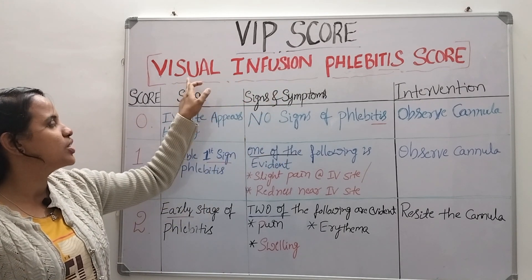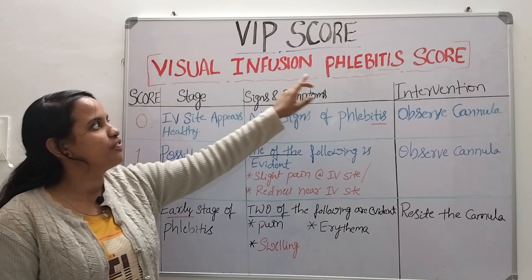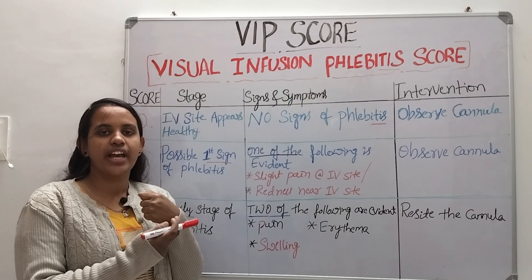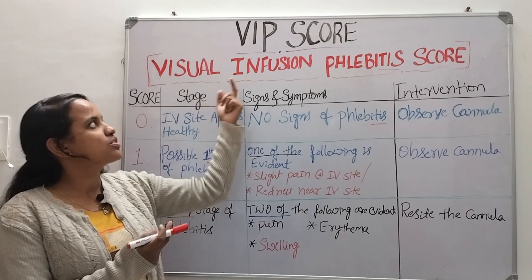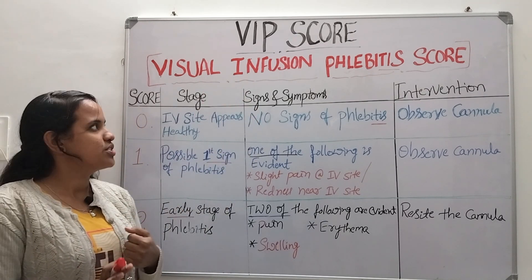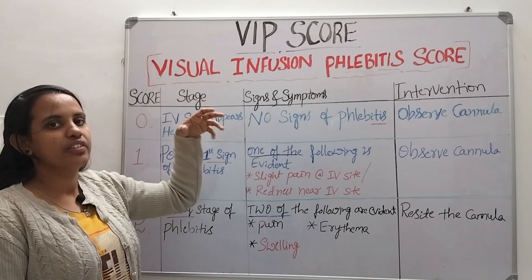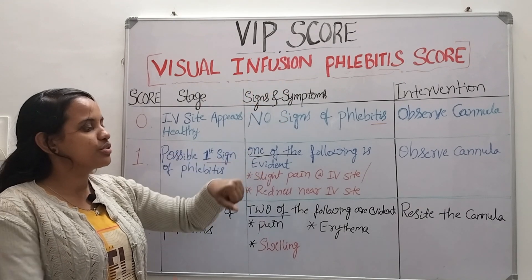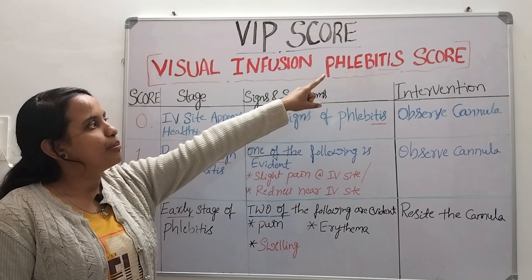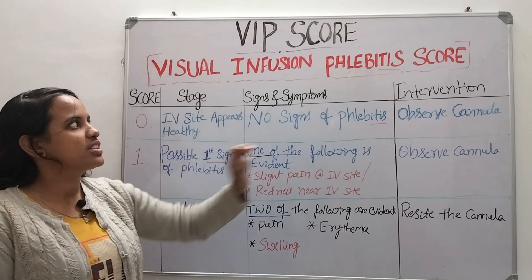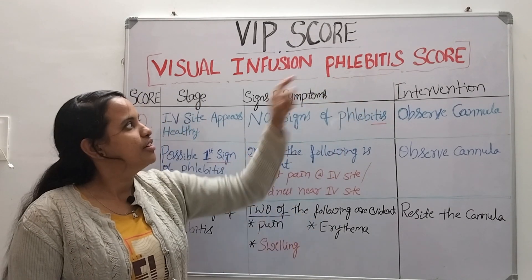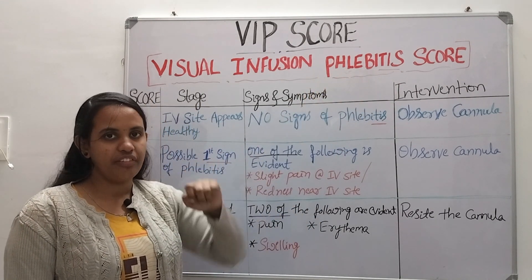VIP score means Visual Infusion Phlebitis score. We use this score to assess the patency of the IV cannulation site. Visual means what we see, infusion means through that IV cannulation site, and phlebitis means inflammation of the vein — 'itis' means inflammation.